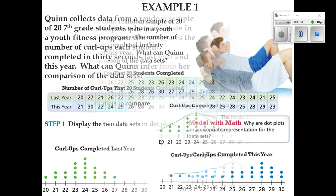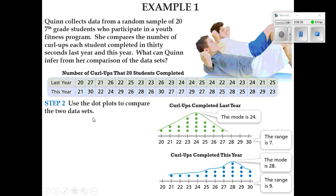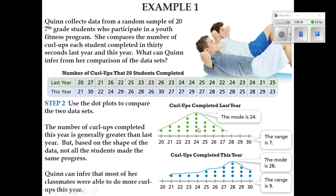What can we do with this data? Well, we can use the dot plots to compare the two data sets. If I'm going to compare these two data sets, first thing I'm going to do is realize that the mode is 24 in the first year, but it's 28 in the second year. The range is 7. Remember, it's the biggest number minus the smallest number, and that's 27 minus 20. That's 7. But over here, it's 30 minus 21, so that's 9. There is a bigger range here in this second year. So the number of curl-ups completed this year is generally greater than the number of curl-ups from last year. But based on the shape of data, not all of the students made the same progress. We got some students still only made about 21, so we have a bigger range here, a variation for the number of curl-ups that were done by students. Quinn can infer that most of her classmates were able to do more curl-ups this year.